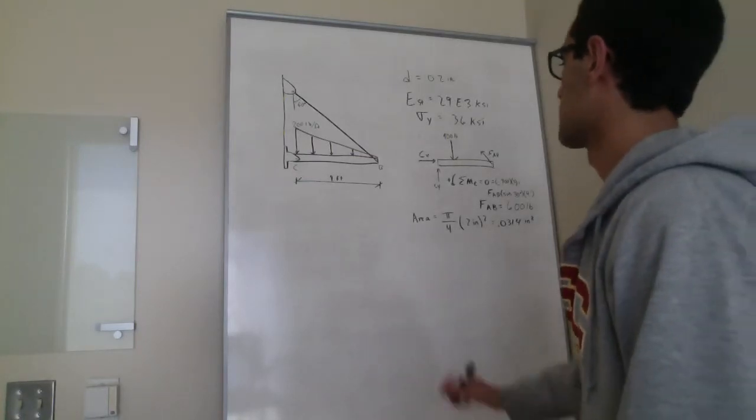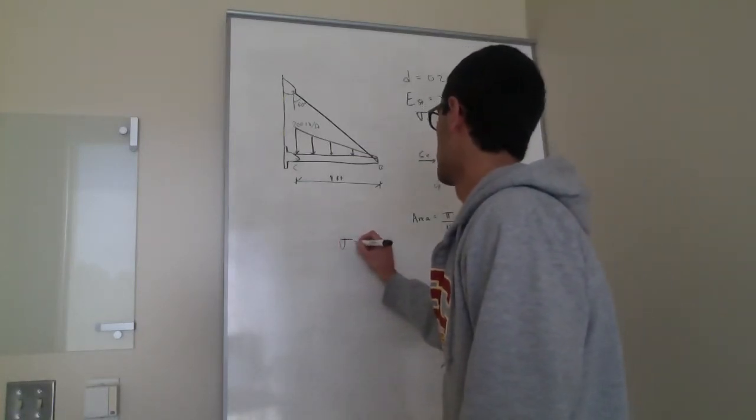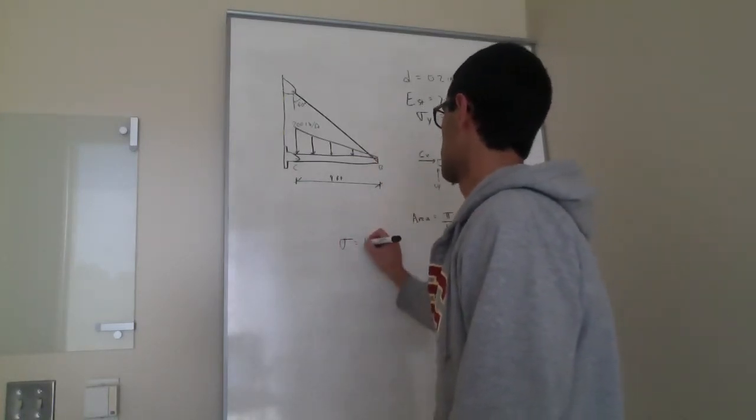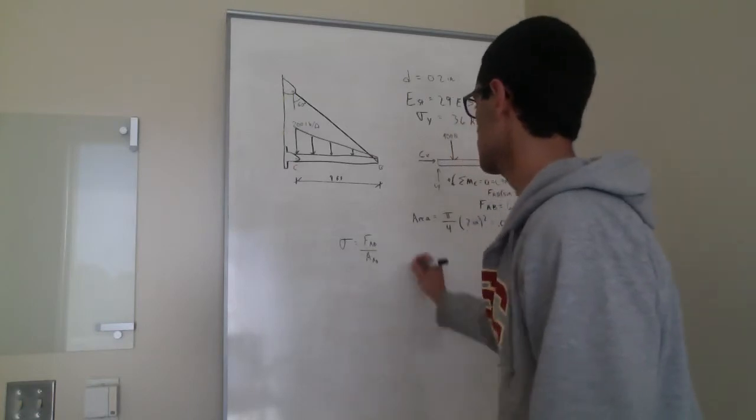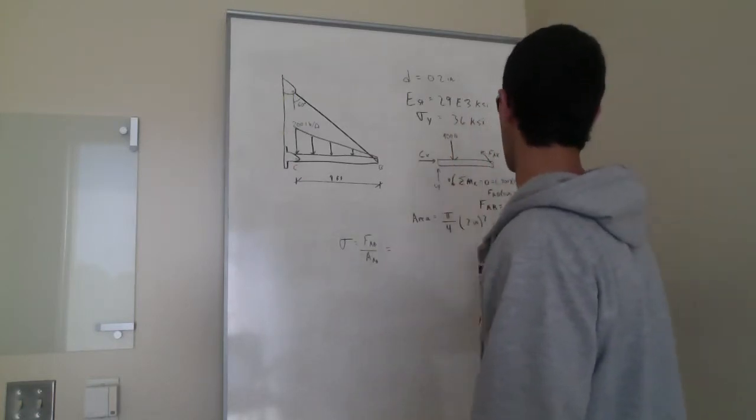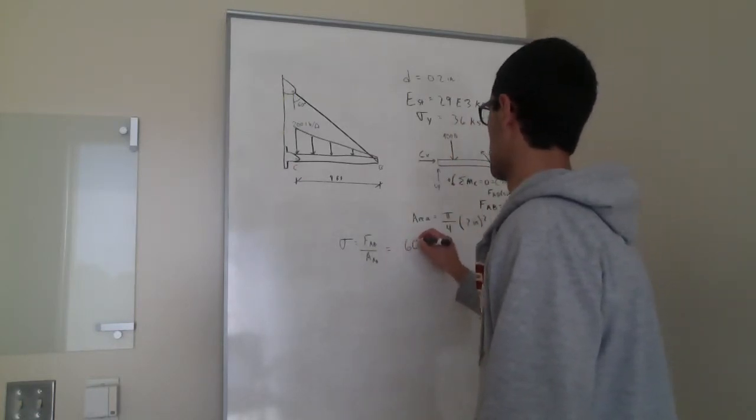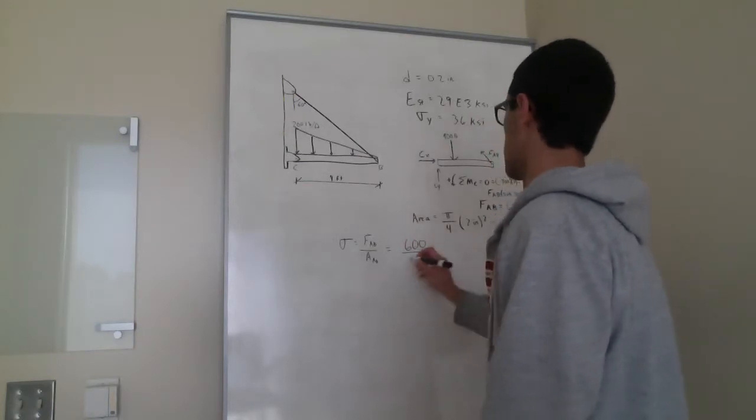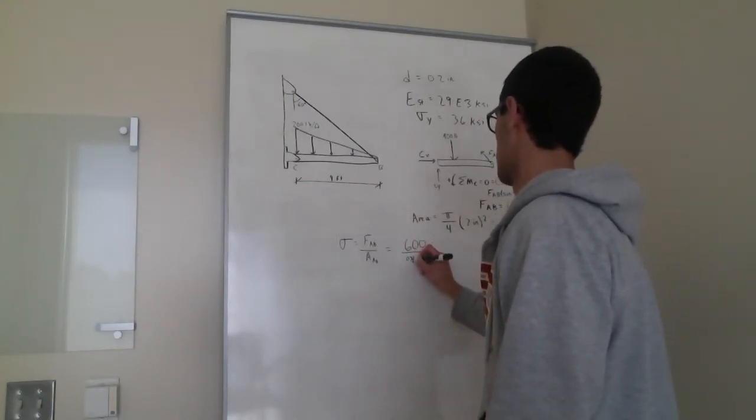Now we can calculate sigma which equals the force over the area. So we have 600 over 0.0314, and that equals 19.11 KSI.